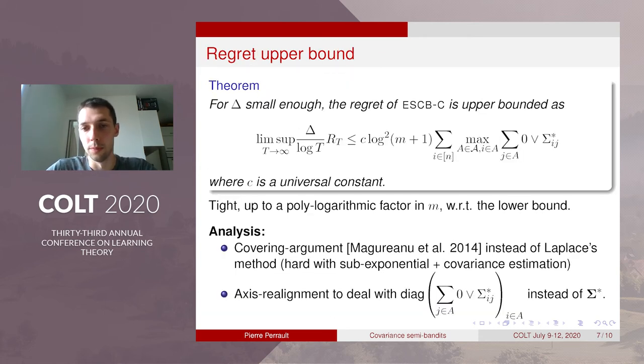So the regret bound for this algorithm is as follows. So as we can see up to a polylogarithmic factor in m we are matching the lower bound.